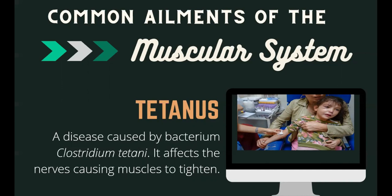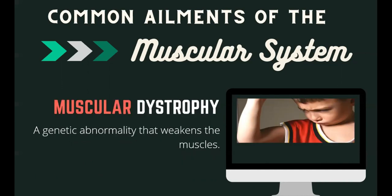Fortunately, tetanus can be prevented by a tetanus vaccine. Muscular dystrophy is a genetic abnormality that weakens the muscles, characterized by muscle deterioration or weakness. As a result, people with this disorder lose their ability to move and do simple activities like walking, running, or lifting things.